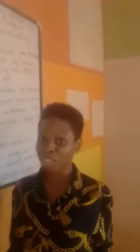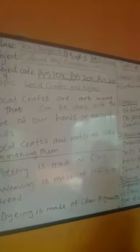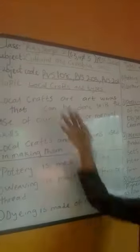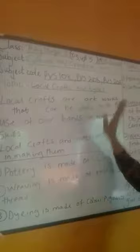Hi kids, once again welcome to the British Average School's e-learning platform. My name is Miss Smore and today I'll be taking you on Cultural and Creative Arts for Key Stage Two, which comprises Year Three, Year Four, and Year Five. Our topic today is Local Craft and Times.